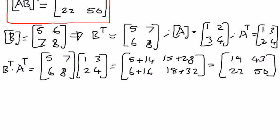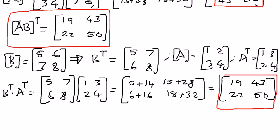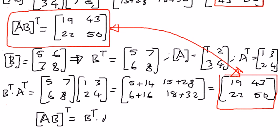So B transpose A transpose is equal to that. Let me put a red box on this here. And as you can see, the product of AB and the transpose of that is the same as B transpose A transpose. The values, the matrix is the same. Therefore, we can say if we were to multiply matrix A times matrix B and then transpose that, that is the same as B transpose times A transpose.